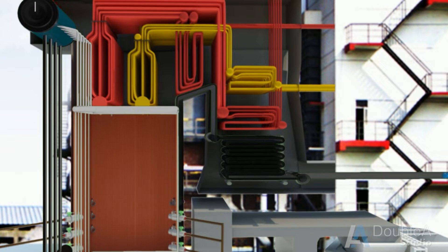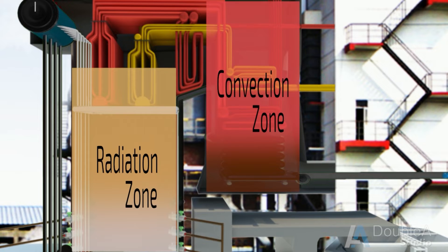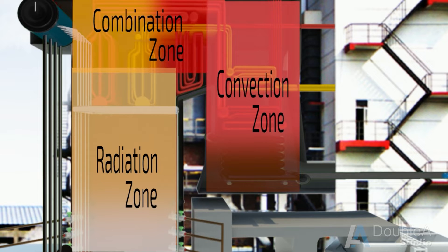The boiler is mainly divided into three zones depending upon the type of heat transfer taking place. The first is the radiation zone, where heat is transferred through thermal emission — this is the zone around the furnace where coal is burned. The second is the convection zone, where heat is transferred by the movement of hot flue gases. The third zone is a combination of the two — radiation plus convection — and comes between the two.